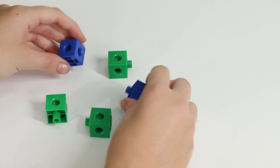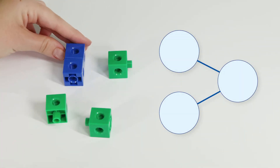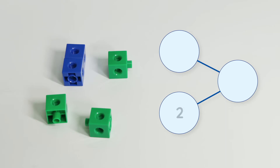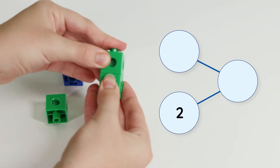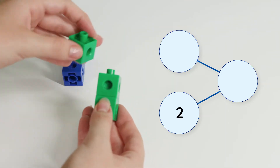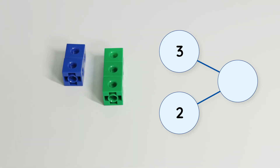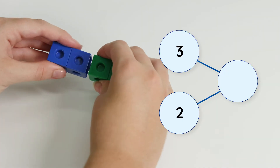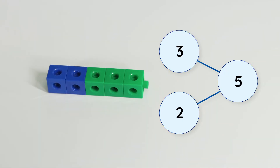Look at these cubes. Let's make a number bond. We have two blue cubes and three green cubes. Two and three make five. There are five cubes in all.